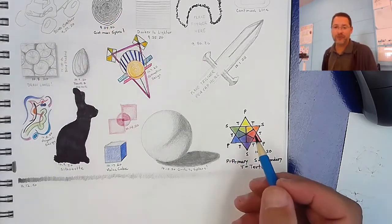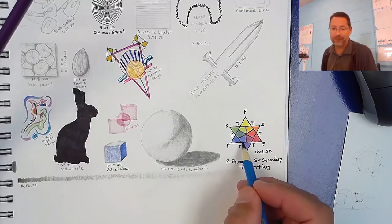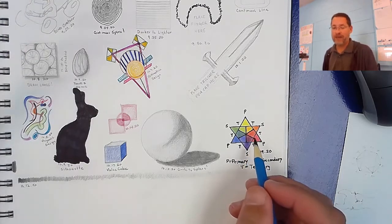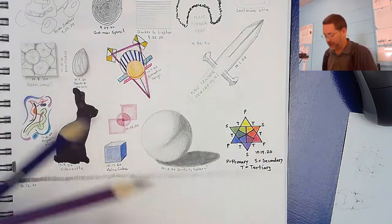Now it doesn't just have to be three colors. It could be two colors that are close to each other. It could even be four colors. There's no hard fast rule but we are going to choose three colors that are close to each other on the color wheel.